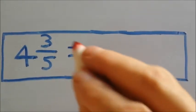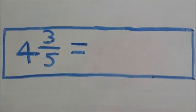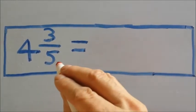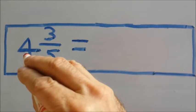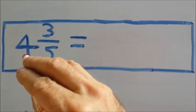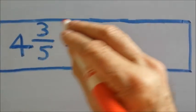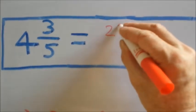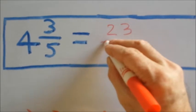In order to turn our mixed number of 4 and 3 fifths into an improper fraction, we take our denominator of 5, multiply it by our whole number of 4 to give us 20. We add our numerator of 3 to give us 23. This becomes the numerator of our improper fraction.